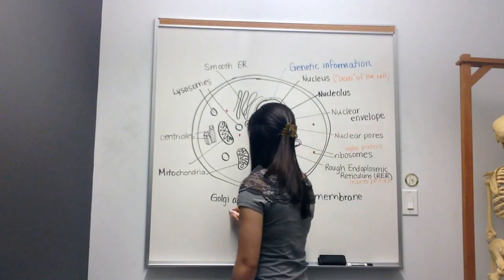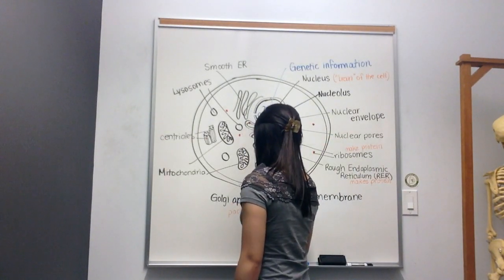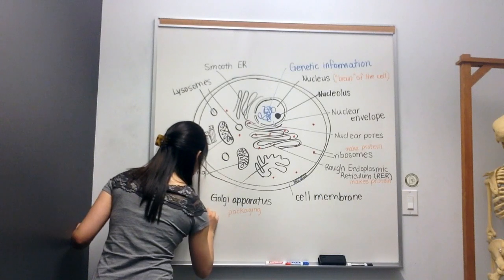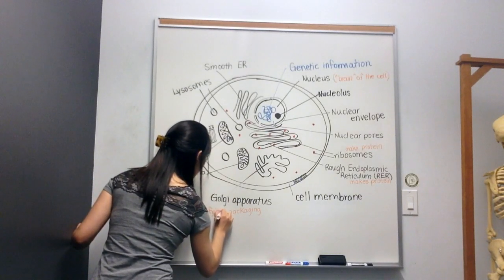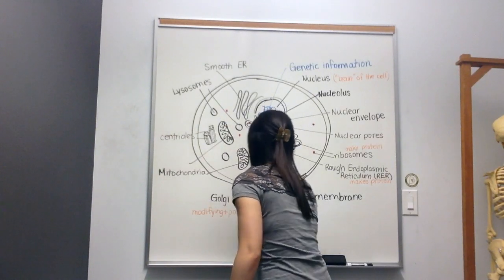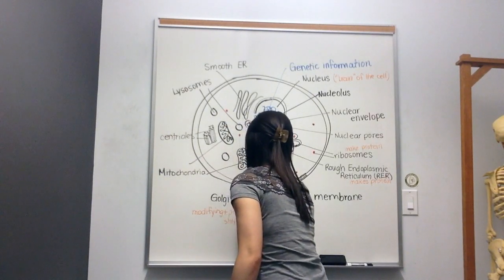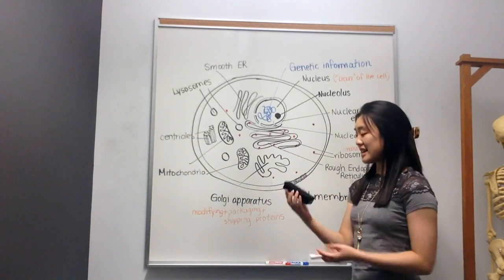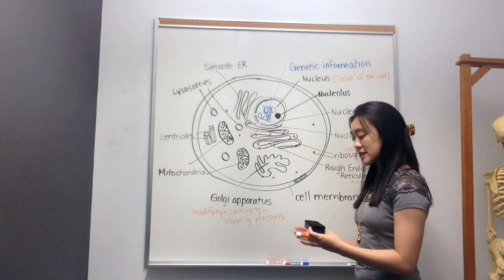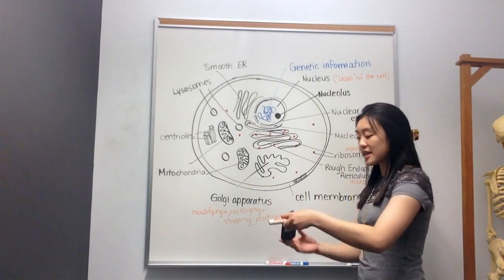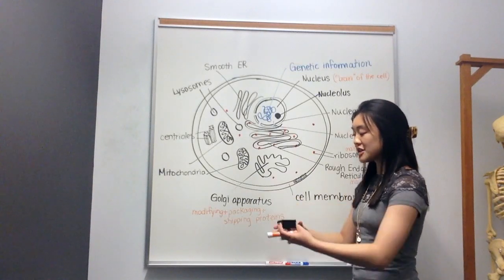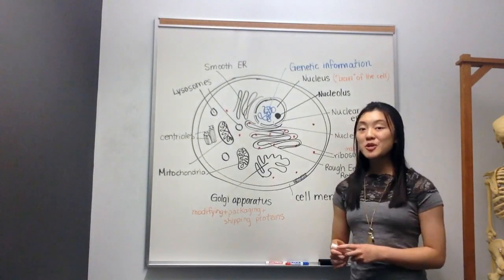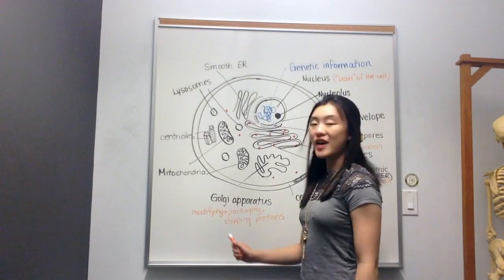The Golgi apparatus is responsible for packaging. But before it packages proteins, it must modify. So modifying and packaging and shipping proteins. I like to think of the Golgi apparatus like a post office. So for example, if the Golgi was taking in this brush, it would take it. I need to add some adjustments. I might need to change some things, add some things on. And then, okay, it's ready to be shipped. So I'll package it up inside a structure called a vesicle. And then I'll then ship it off to leave the cell. And I'll show you a little example of that later. Again, modifying, packaging, and shipping proteins.